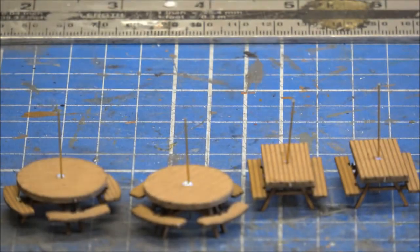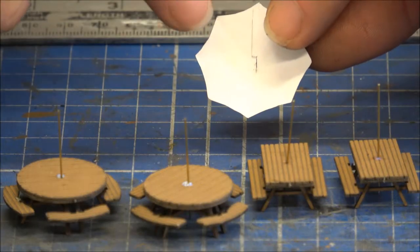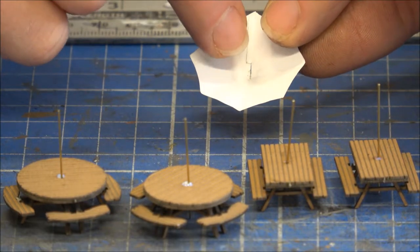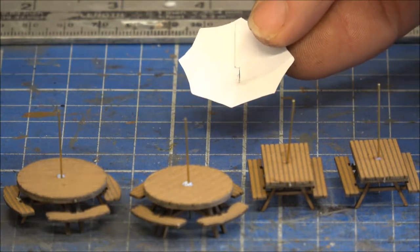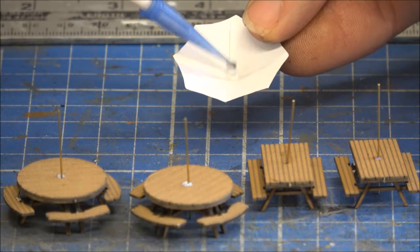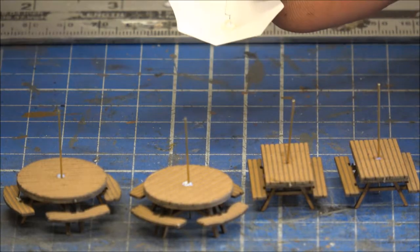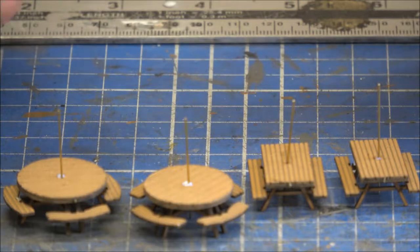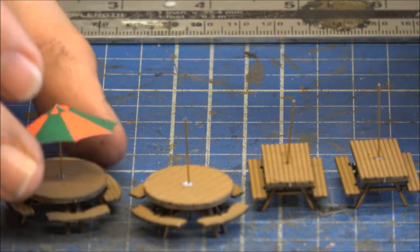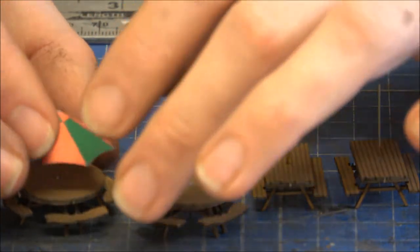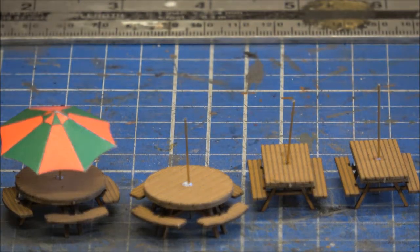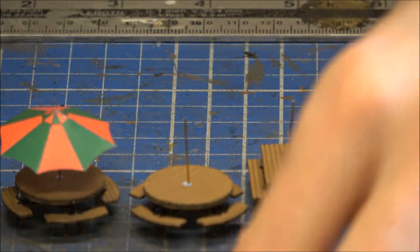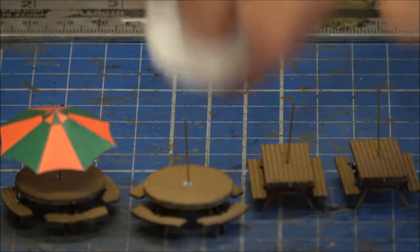So then all that's required is to put a little blob of glue on the inside, wait for the camera to focus up again. A little blob of glue right in the centre of the underside of the umbrella, and then you quite simply stick it on top, centre it up and then you literally wait for it to dry. Just do that for each of them.